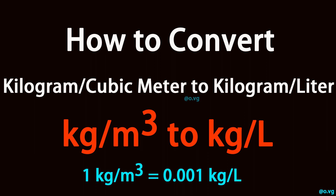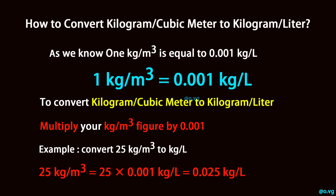How to convert kilogram per cubic meter to kilogram per liter. As we know, 1 kg per cubic meter is equal to 0.001 kg per liter.